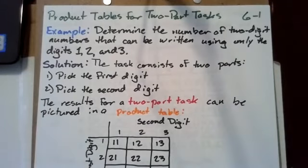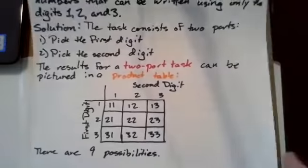In this video, we will discuss product tables for two-part tasks. Here's an example to start us off: Determine the number of two-digit numbers that can be written using only the digits 1, 2, and 3. The task consists of two parts: pick the first digit, then pick the second digit. The results for a two-part task can be pictured in a product table.